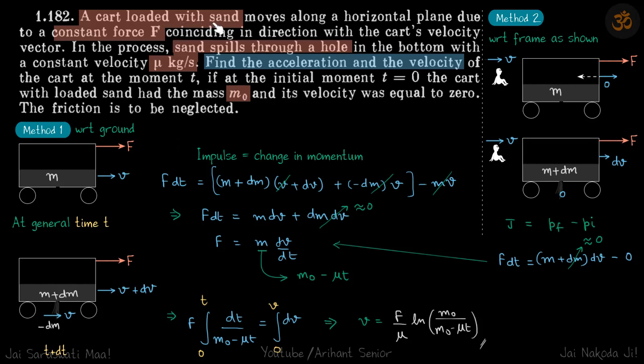We have a cart that is loaded with sand and a constant force F is acting on it. There's a small hole at the bottom of the cart from which the sand is spilling out with a constant rate μ kg per second. We need to find the acceleration and velocity of the cart if the initial mass of the cart was m0.